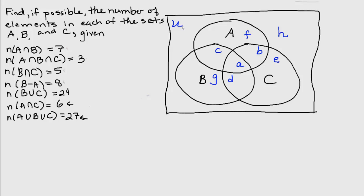has actually been given to us. This is often the region that I look for first because it's the overlap of all three sets. So if I have the intersection of all three sets, then I know we're talking about region A. We know that region A has three elements. So let's go ahead and label that cardinality 3. That's going to help us as we move along.